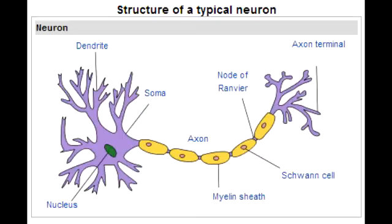Name some infections that can lead to Acute Inflammatory Demyelinating Polyradiculopathy. The infections that can lead to this include Campylobacter jejuni and cytomegalovirus. These infections lead to AIDP due to an autoimmune attack of the peripheral myelin caused by molecular mimicry.